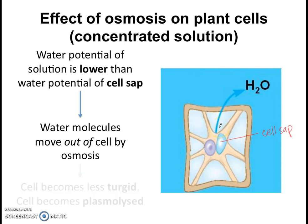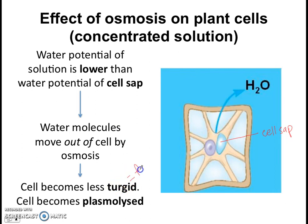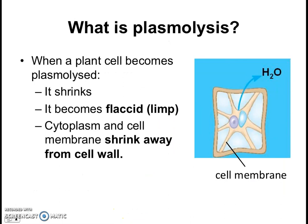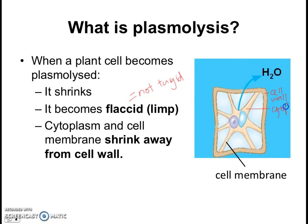This will cause the cell to become less turgid — turgid means firm. The cell becomes plasmolysed. This is a very special term we use for plant cells. When the plant cell becomes plasmolysed, firstly it shrinks and becomes smaller because water moves out. Secondly, it becomes flaccid — flaccid means not turgid — flaccid and limp, so a bit softer. Interestingly, we also see that the cytoplasm and the cell membrane shrink away from the cell wall. The cytoplasm has moved away from the cell wall, and the cell membrane has also shrunk away from the cell wall.